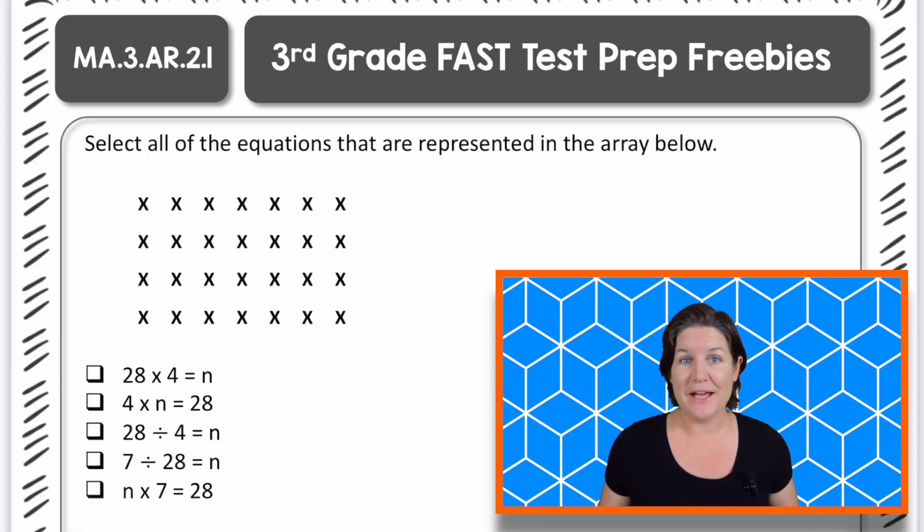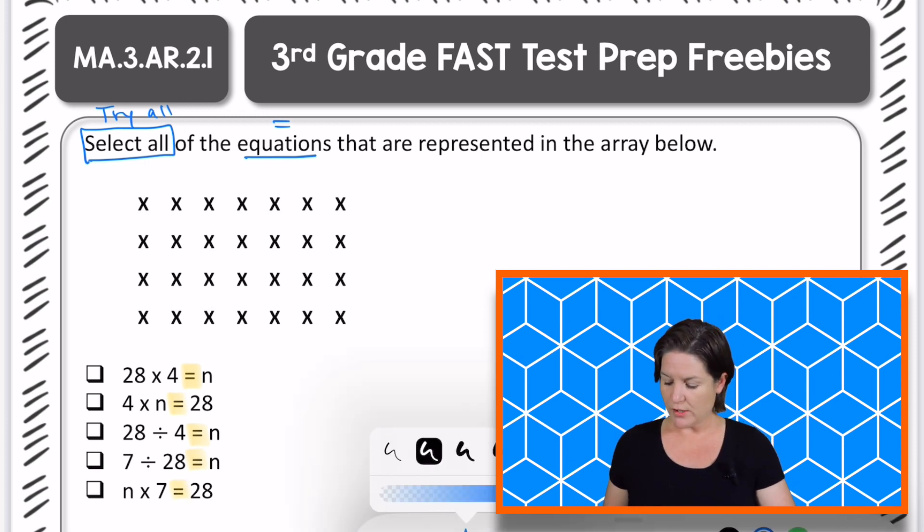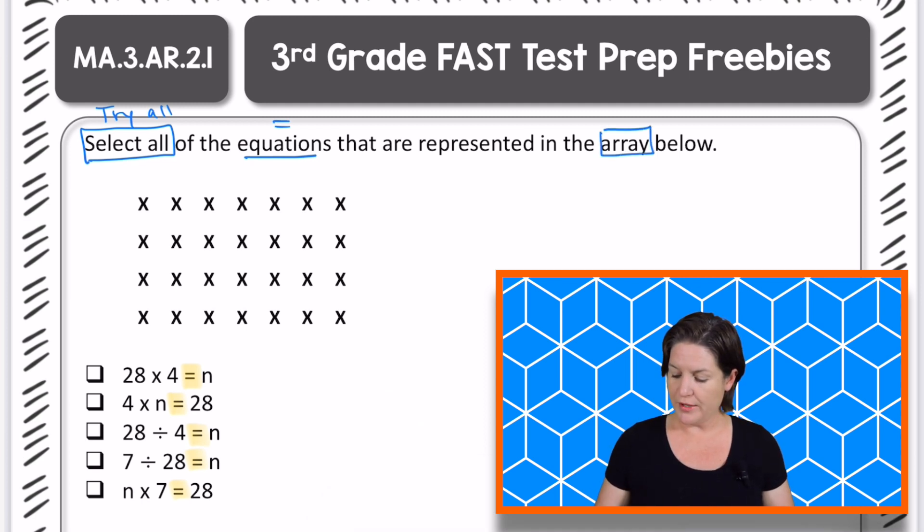Welcome back. Let's go ahead and go over it. So it says to select all, which means that we need to try all of the answer choices. Select all of the equations. They have equal signs. You'll notice all of the equations down here have equal signs. That's why they are called equations. So select all of the equations that are represented in the array below. Well, this right here is the array and an array is represented by columns and rows with an equal amount in each row.